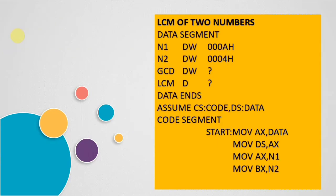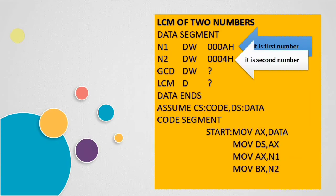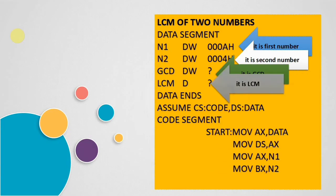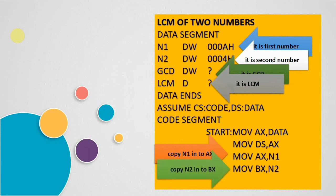Here is the program — LCM of two numbers. In the data segment we have declared two numbers N1 and N2, and two other operands: GCD and LCM. N1 is the first number, N2 is the second number, GCD is used to find the greatest common divisor, and LCM is to store the result. We take the first number N1 into AX and the second number N2 into BX.